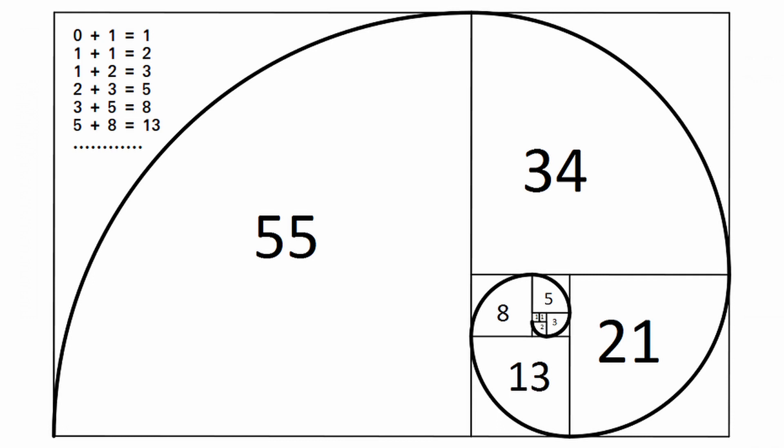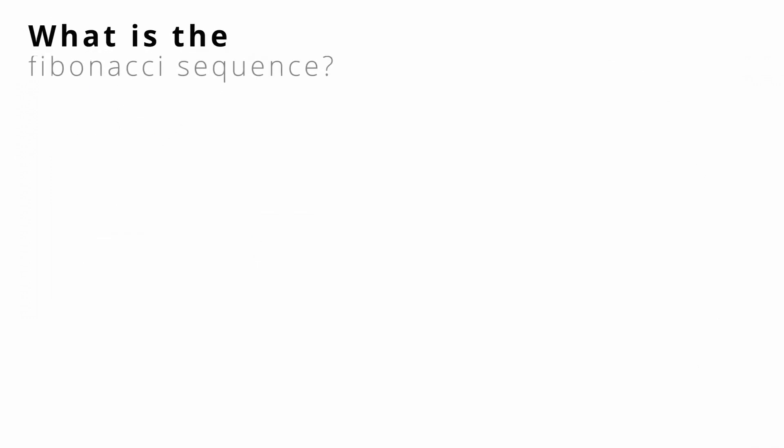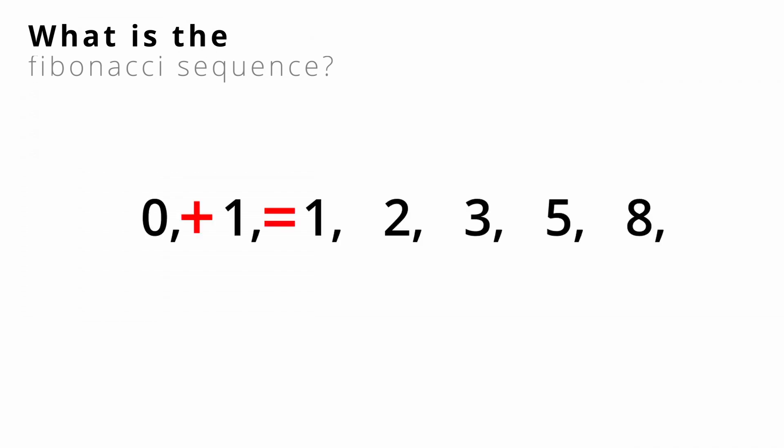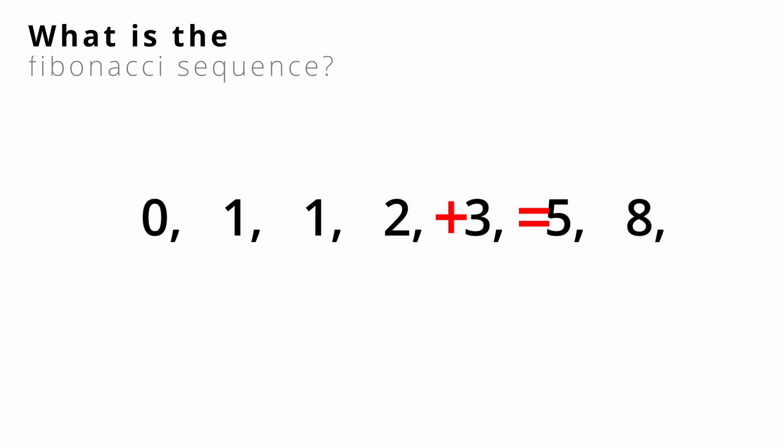Fibonacci in a nutshell is basically a sequence such that each number in the sequence is the sum of the two numbers that precede it. I have a very short video on the Fibonacci sequence that I will link above. If you're unfamiliar with the Fibonacci sequence and its application in code, I suggest that you take five minutes to go and watch that video prior to continuing with this section of the course.